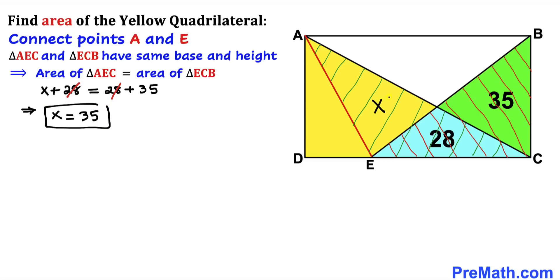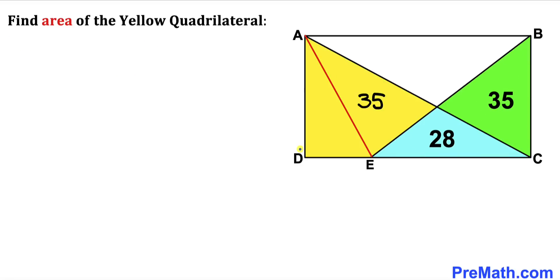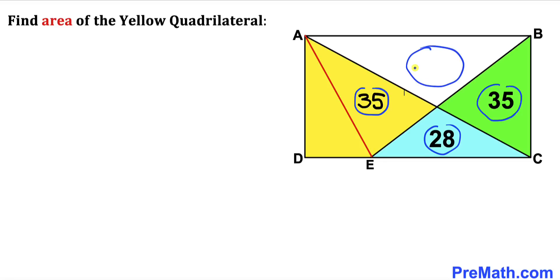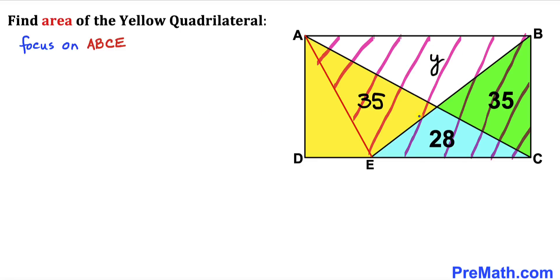So the area of that triangle, which was X, is now replaced by 35 cm². For the next step, let's focus on four triangles: the green one, the blue one, the yellow one, and the white one. Since we don't know the area of the white triangle, let's represent it by Y. Now let's focus on quadrilateral A, B, C, E.